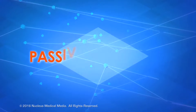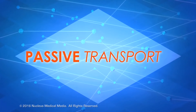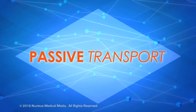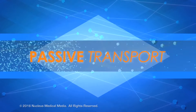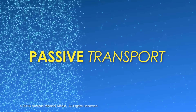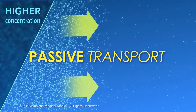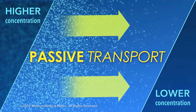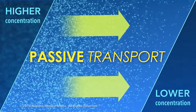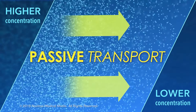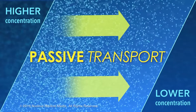In this video, we will be discussing passive transport. Passive transport is when particles move through the cell membrane from an area of higher concentration to lower concentration without the use of energy, also described as movement along the concentration gradient.